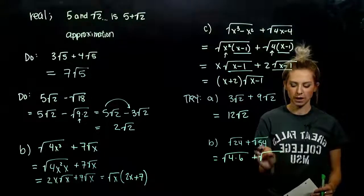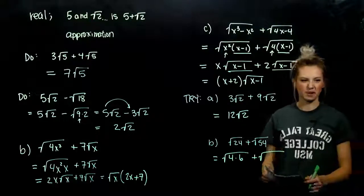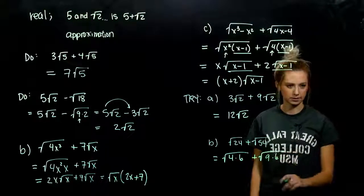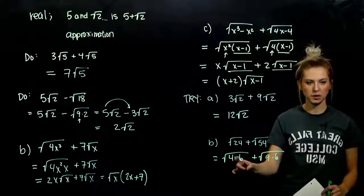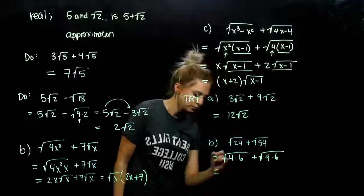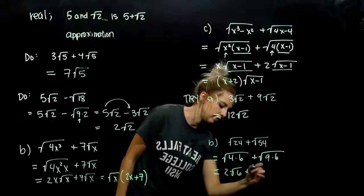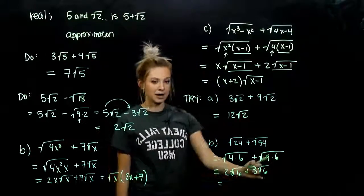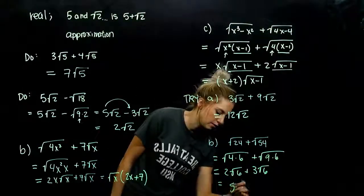So how can we break up 54 into a perfect square and something else? 9 and 6. So we can see this will evaluate out. That one will as well and be left with root 6. Alright, so square root of 4 is 2, we have our leftovers. Square root of 9 is 3, and we've got our leftovers. Now they match exactly. So I've got 5 factors of root 6.